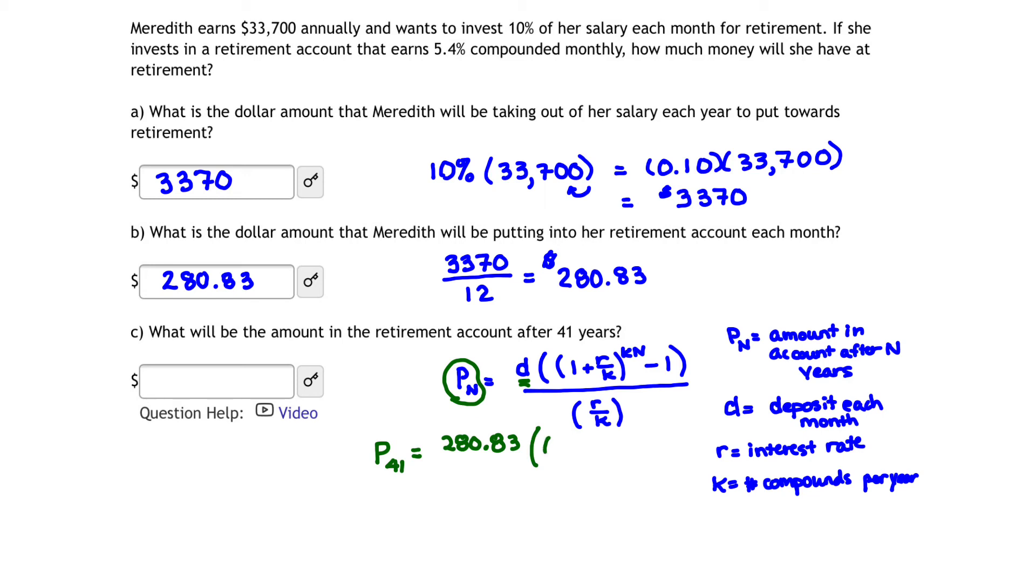What is R? R is our interest rate. So in place of R, we're going to put 0.054 because we're converting 5.4% into a decimal. K is 12 because we're compounding 12 times per year. And K times N is going to be 12 times 41 minus 1, parentheses closed, all divided by R over K, or 0.054 over 12.